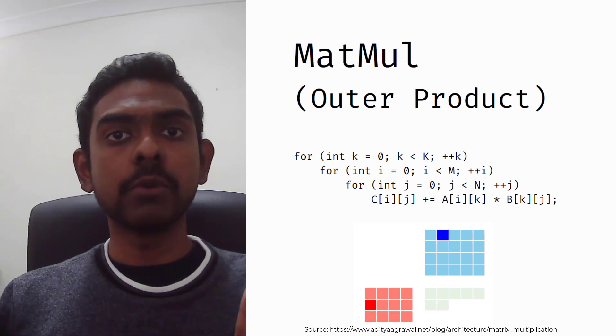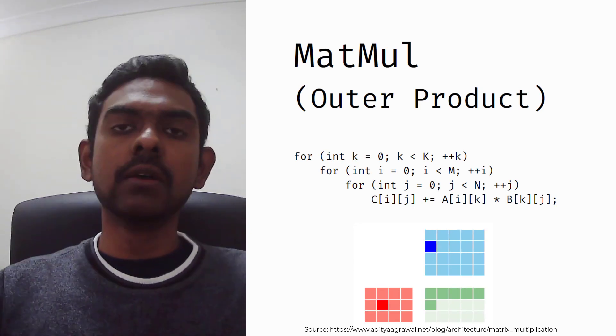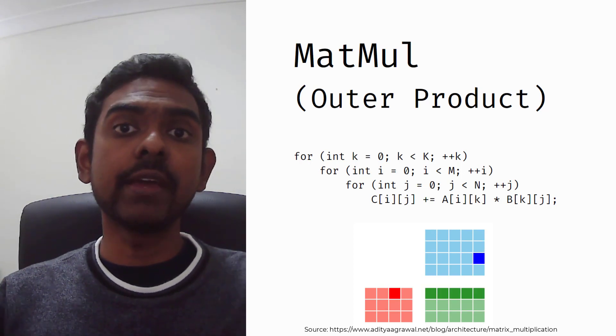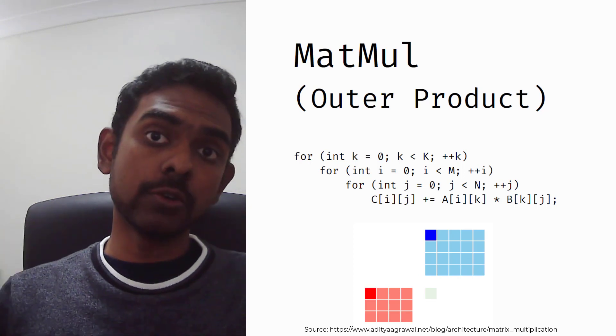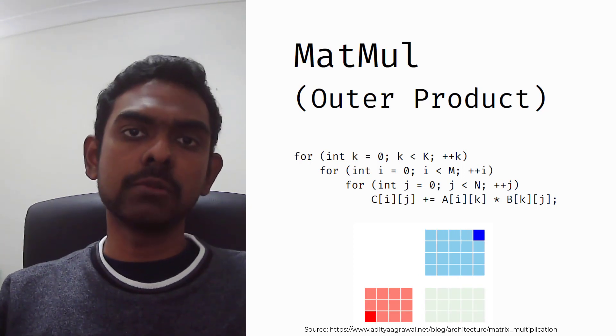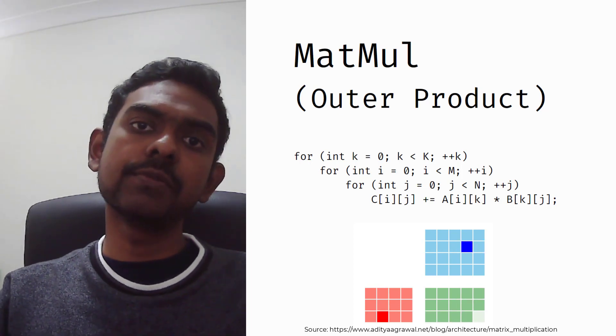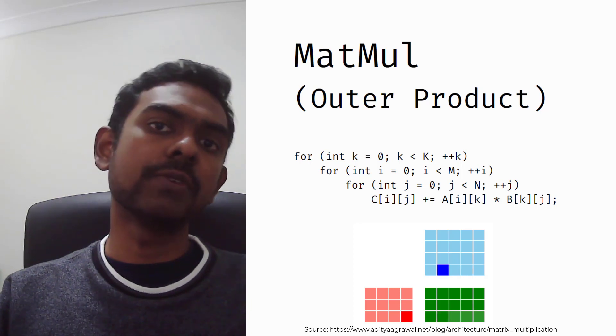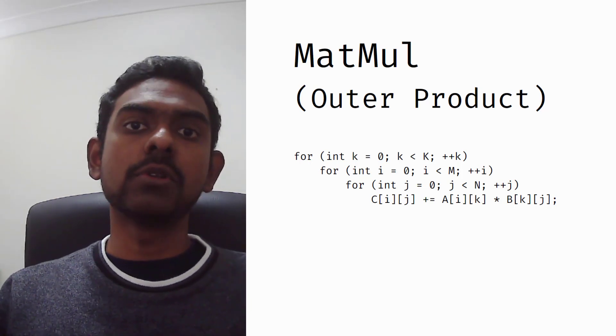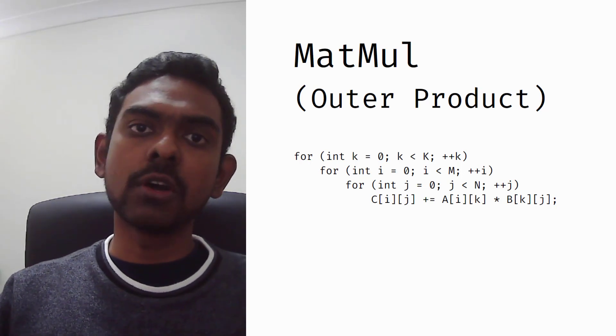This brings us to trick number one. If you rearrange the looping structure, you can get a formulation where you load only one column of A and one row of B at a time. The idea is to take the loop that goes through K as the outermost loop. As shown in the animation, you only load one column of A and one row of B once. But there's still a problem: the shared memory and register files inside an SM are quite small. What if we can't fit the entire row or column of A and B inside them? Is there a way to load an arbitrary block and compute iteratively to still get the correct answer?